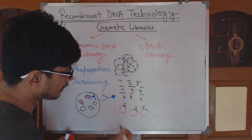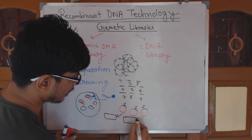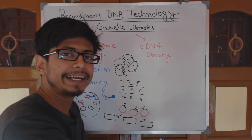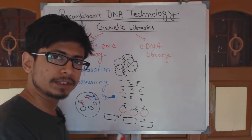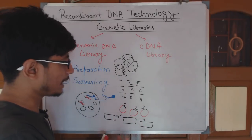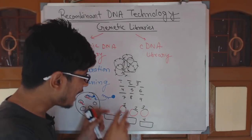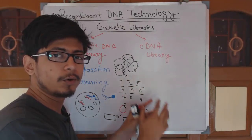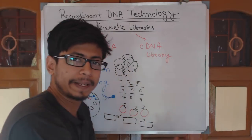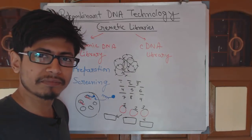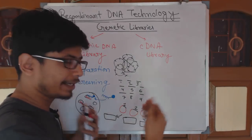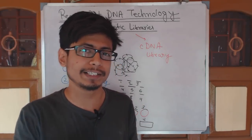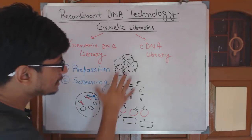Now, each of those vectors we insert into a specific host bacterial cell, then we allow the cells to grow and we plate them onto an agar plate containing bacterial media so they can grow easily. The cells will grow and they will carry each segment of the whole chromosomal DNA. If you look at this plate, that plate contains all the genes as colonies, and inside each bacterial cell different genes are present. This is the idea of creating a genomic DNA library.